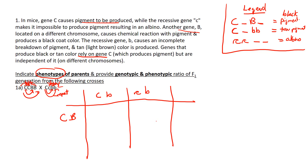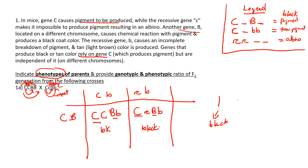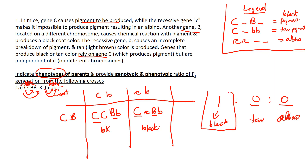Now bring the C's together: capital C, capital C, capital B, little b — show the dominant allele first. Go to our legend: as long as I have capital C and capital B, this is always a black offspring. Capital C, little c, capital B, little b — same thing: capital C and capital B means black as well. So the phenotypic ratio is one black, or 100%. If asked for tan or albino offspring, those would be zero in this cross.